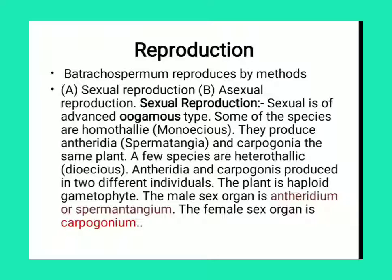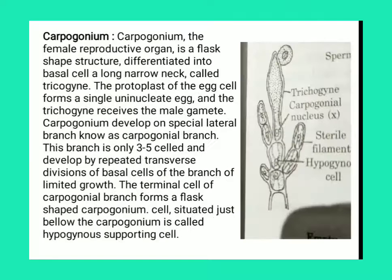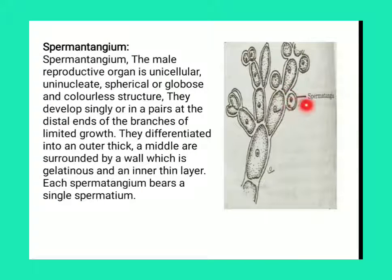In Batrachospermum, the same structure — the spermatangia — you can see that spermatangia are the smallest in size compared to carpogonia. The carpogonium structure is non-motile and the spermatangia structure is motile. So, this type of reproduction is known as the oogamous type of sexual reproduction.